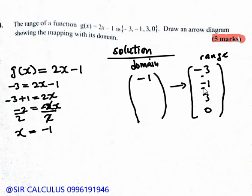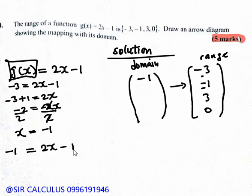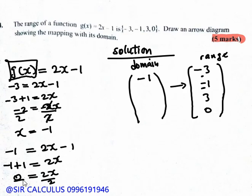Now we substitute g(x) = -1: so -1 = 2x - 1. Collecting like terms: -1 + 1 = 2x, giving 0 = 2x. Dividing both sides by 2, x = 0. So when g(x) = -1, x = 0.